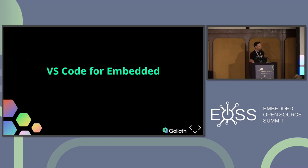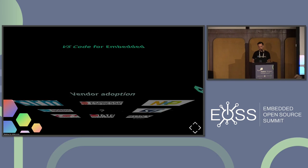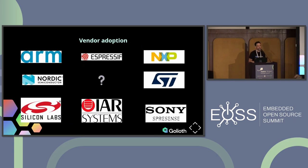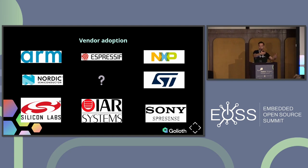Let's talk about how the world of embedded and VS Code intersect. One of the more interesting things over the last two to three years is that embedded vendors are adopting VS Code with two different degrees of adoption. Companies like ARM have their IDE experience built around VS Code and their ARM ecosystem things like CMSIS-Pack. Companies like Nordic are building their entire developer experience around VS Code. There are eight companies listed and the number is growing pretty much every month where a company creating tools for embedded developers is either adopting VS Code as a recommendation or going all in.